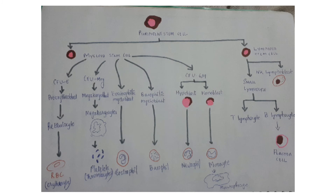In this figure you can see that the pluripotent stem cell divides into myeloid stem cell and lymphoid stem cell, which is common for the origin of the remaining progenitors and precursor cells. The myeloid stem cell gives rise to CFU-E, a progenitor cell; pro-erythroblast is formed, then reticulocyte, and from that RBC (erythrocyte) is formed. CFU-Meg gives rise to megakaryoblast, then megakaryocytes, which in turn give platelets.